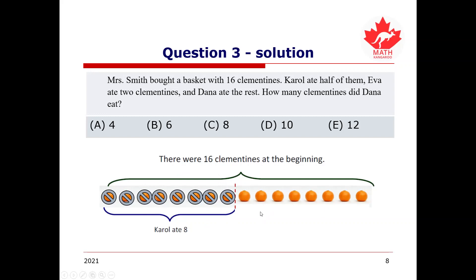Now, there are the other half of the clementines that we have, which are the remaining eight. And, since we know that Eva ate two of them, we can easily get rid of, subtract two from the eight here, which will give us the remaining six. So, as the question says that Dana ate the rest of them, this means that Dana must have the remaining six clementines. Therefore, our answer will be B, six.